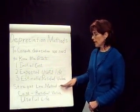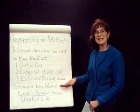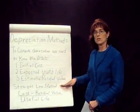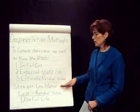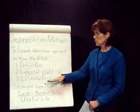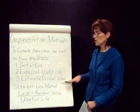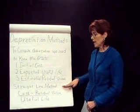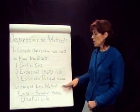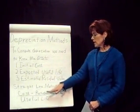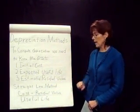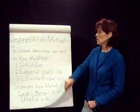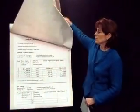The first method that we're going to look at, which is the easiest, is the straight-line method. Just like it's telling you, it's going to be straight — we're going to depreciate the same amount each year. To do this, we'll take cost minus residual value over the asset's useful life.